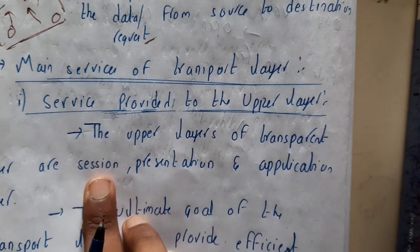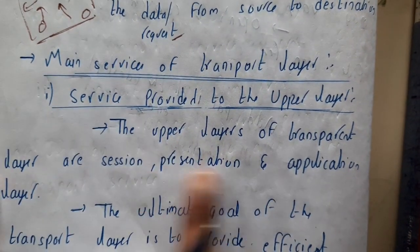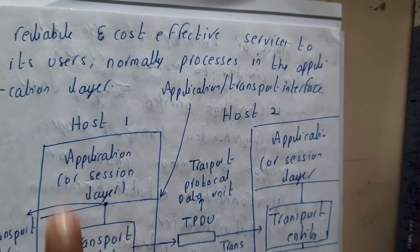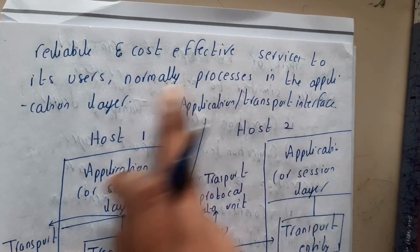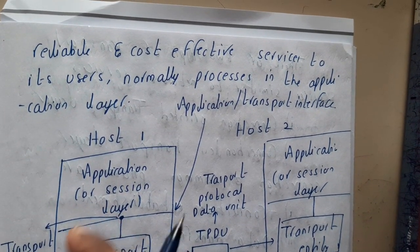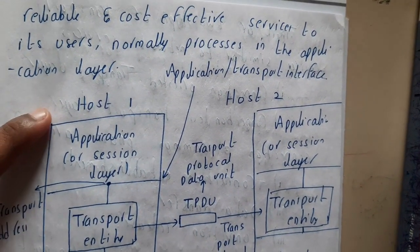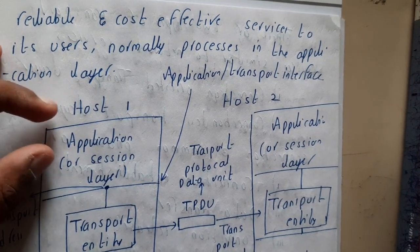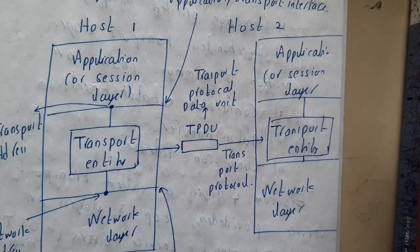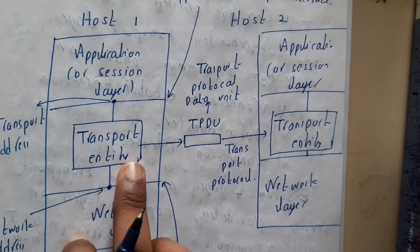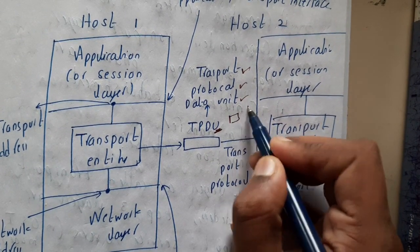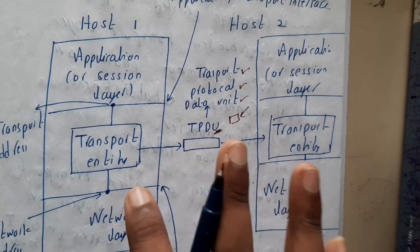The upper layers of the transport layer are the session layer, presentation layer, and application layer. The ultimate goal of the transport layer is to provide efficient, reliable, and cost-effective service to its users, normally processed in the application layer. In a diagram, host one sends data to host two — the transport entity collects data from the upper layers and transmits it. Each unit is called a TPDU — Transport Protocol Data Unit — which is the smallest unit being transferred.